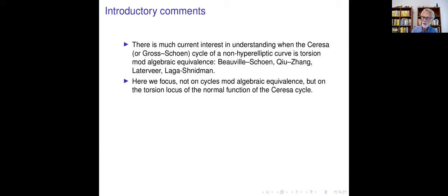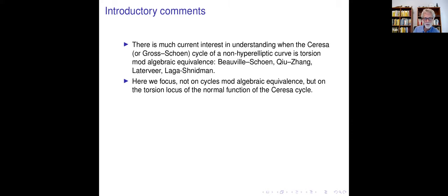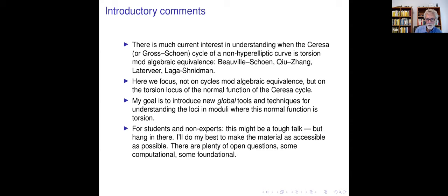A lot of people have been thinking about this recently: Baville-Schön, Chu and Zhang, Latavir and Lagash-Didman. They're mainly concerned with the cycle mod algebraic equivalence. Because I don't do that kind of mathematics, I want to talk about where the normal function is torsion—that's an easier question—but it's related, since if the cycle is torsion mod algebraic equivalence, the normal function will vanish or be torsion. My main goal is to introduce some new global tools and techniques for understanding where the normal function of the Tseresa cycle is torsion.